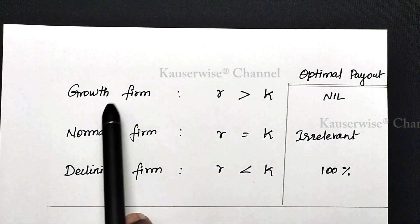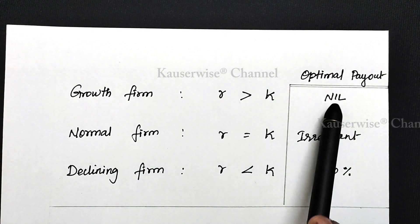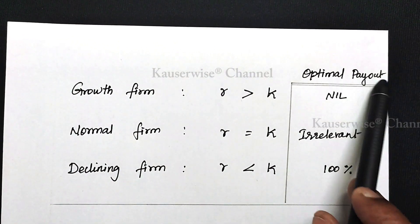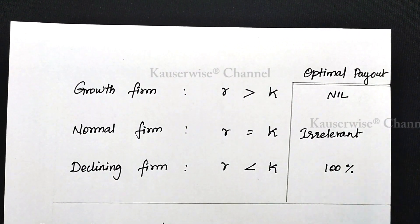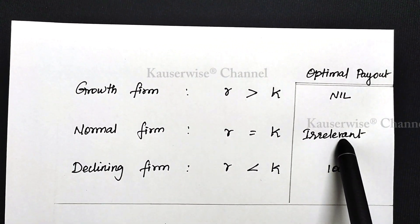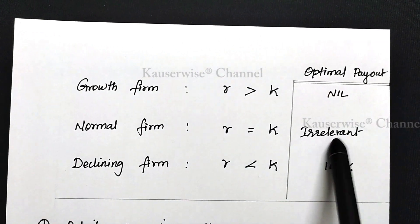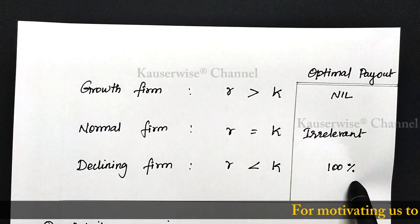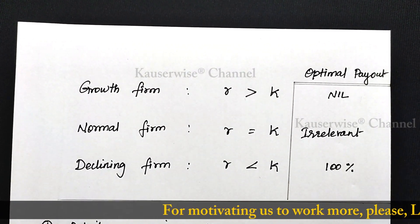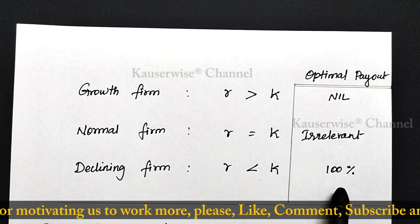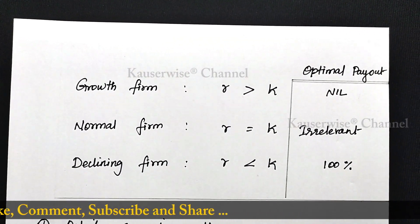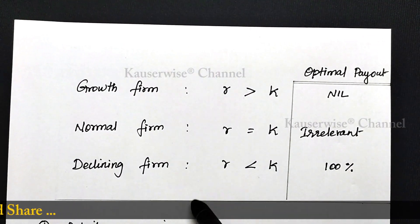For a growth firm, the optimum payout is nil — that is, 0% payout is the optimum payout. For the normal firm, the optimum payout is irrelevant, so there is no optimum payout; whatever may be the proportion of payout, that is not going to affect the firm value of shares. For a declining firm, the optimum payout is 100% — the company has to declare the entire profit as dividend. These are the important implications you should know: how to find out the optimum payout for three different types of firms.